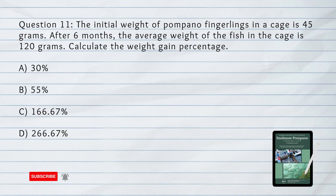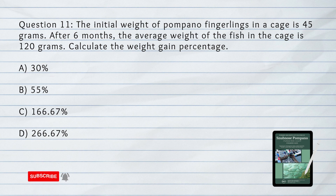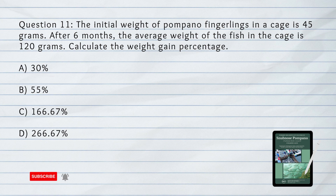Number 11. A fish farmer has a cage with Pompano fingerlings. The initial weight of Pompano fingerlings in a cage is 45 grams. After 6 months, the average weight of the fish in the cage is 120 grams. Calculate the weight gain percentage. A. 30%. B. 55%. C. 166.67%. D. 266.67%.